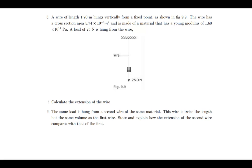We have this question here: a wire of length 1.7 meters hangs vertically from a fixed point as shown in the figure. The wire has a cross-sectional area of 5.74 × 10⁻⁸ meters squared and is made of a material with a Young's modulus of 1.6 × 10¹¹ pascals. A load of 25 newtons is hung from the wire. Calculate the extension of the wire.